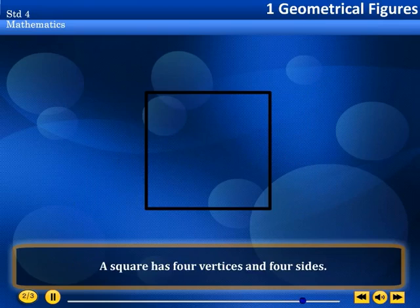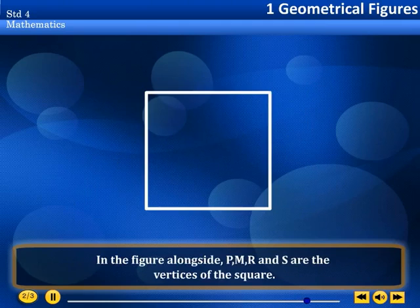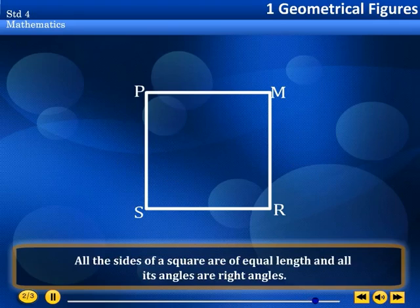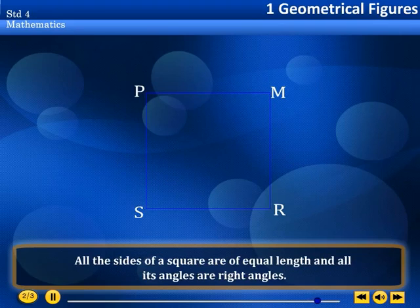Square. A square has four vertices and four sides. In the figure alongside, P, N, R, and S are the vertices of the square. All the sides of a square are of equal length and all its angles are right angles.